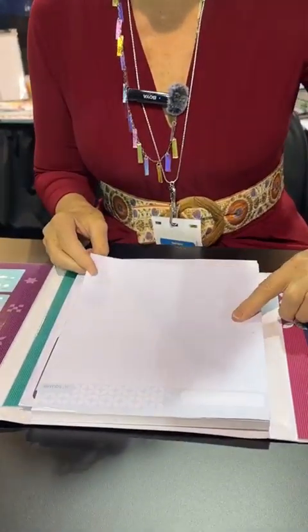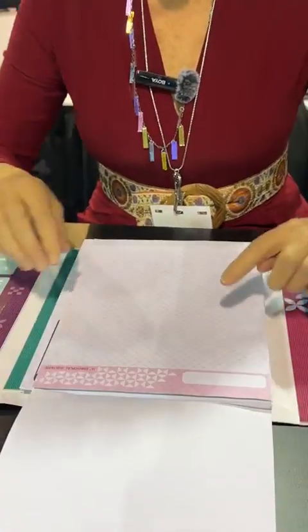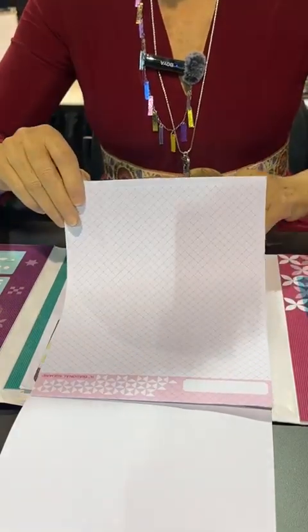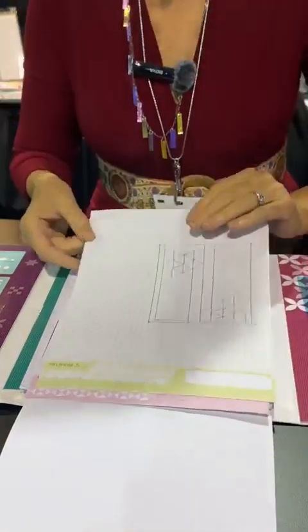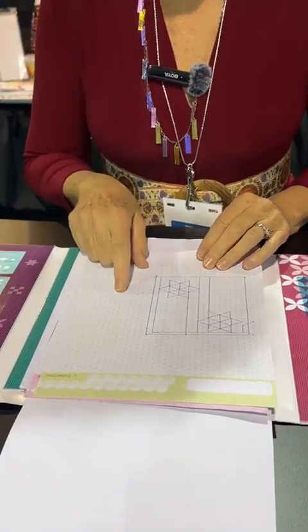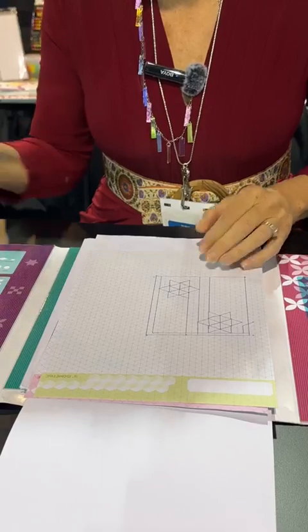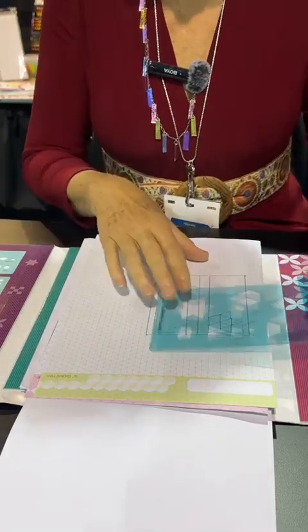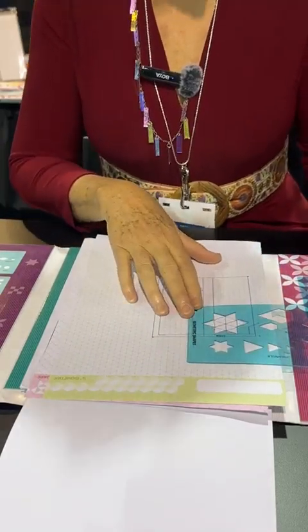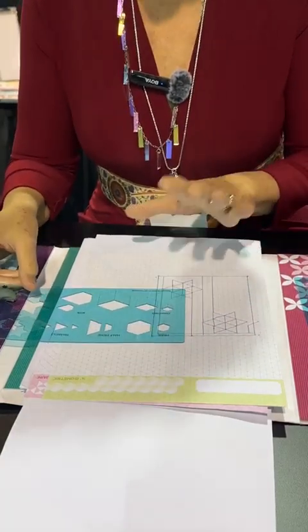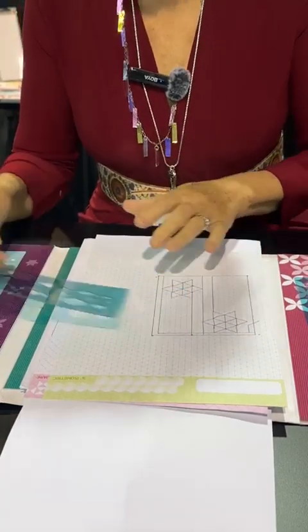So the first thing I want to show you is you get three different graph papers. So you get quarter inch square, you get the diagonal which is on point, and then you also get isometric paper. And the great thing about the isometric is we have templates just for that. So you can see here, I started sketching out a star and there's all sorts of different things. If you like to do hexagons, this is the paper for you.